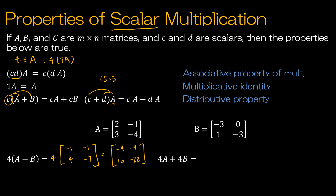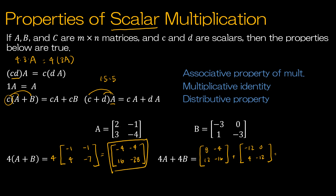Now I would look at 4A plus 4B. I multiply A by 4: 8, negative 4, 12, negative 16. Add to that 4B: negative 12, 0, 4, negative 12. And if I add, I should end up at the same result: 8 plus negative 12 is negative 4, negative 4 plus 0 is negative 4, 12 plus 4 is 16, and negative 16 plus negative 12 is negative 28. So again, not a proof, just an example to show what that property is telling us.